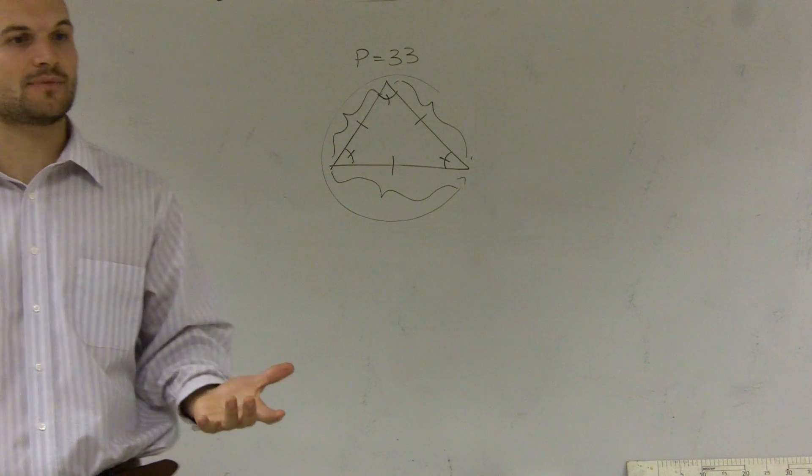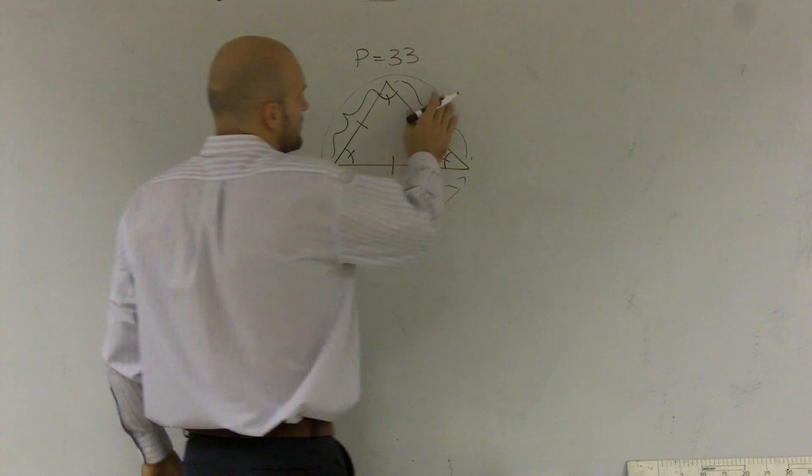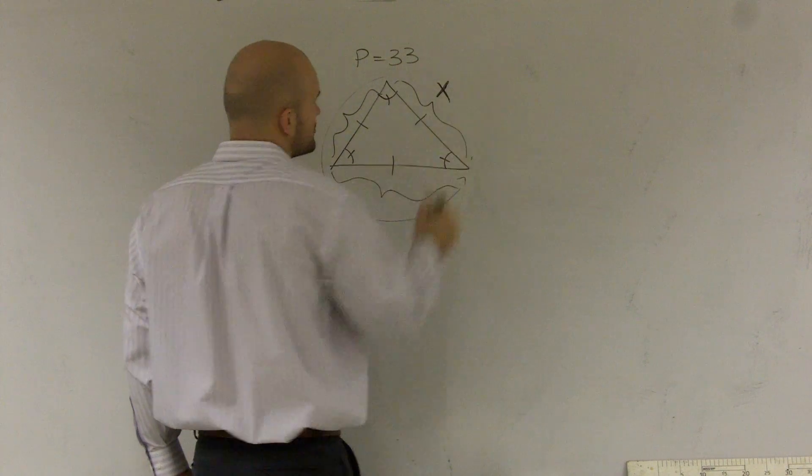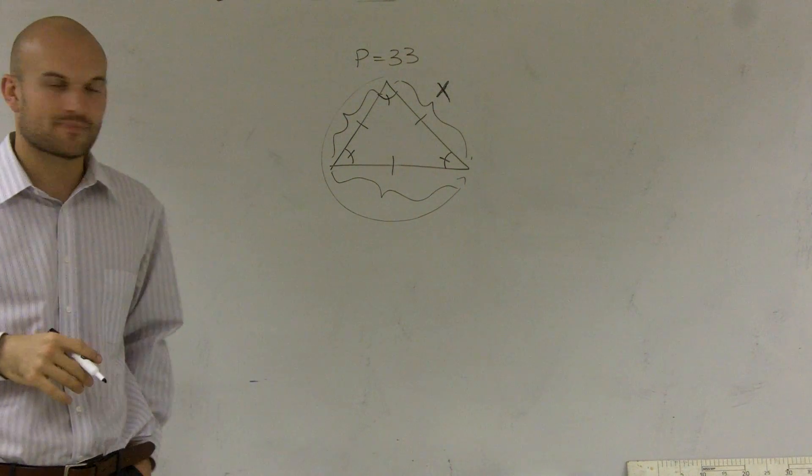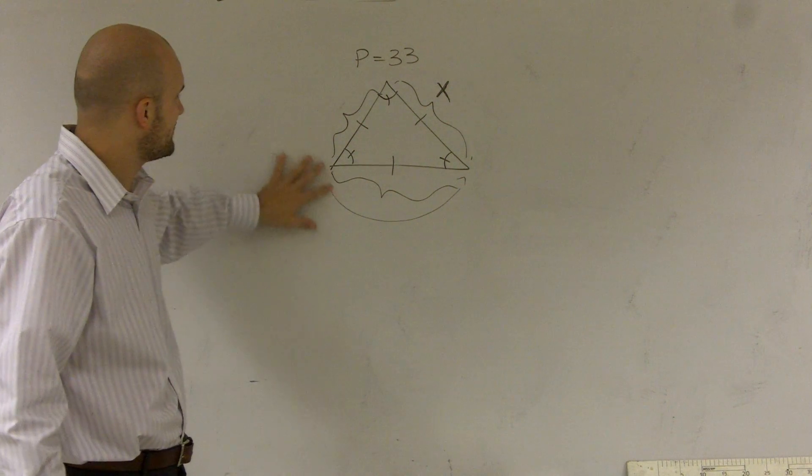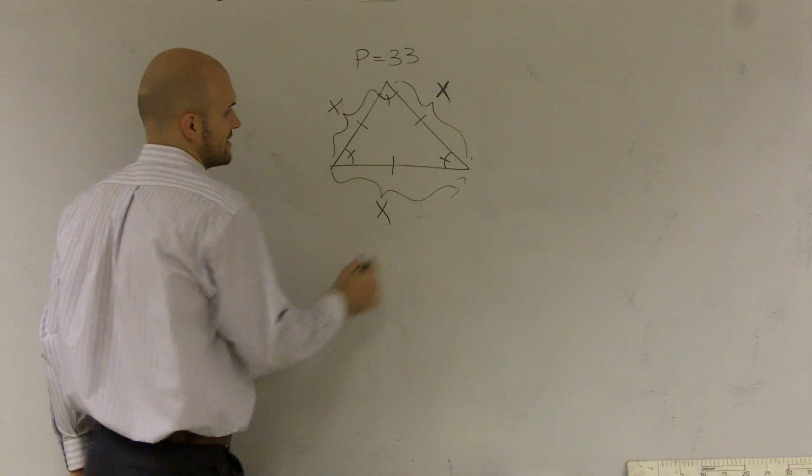We give it something to represent that value. The most common representation is a letter, and x is usually our most famous letter for choosing. So we choose x. Remember, this is an equilateral triangle. So if one side's x, then that side's x, and that side's x.